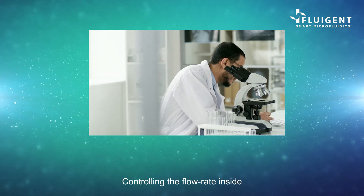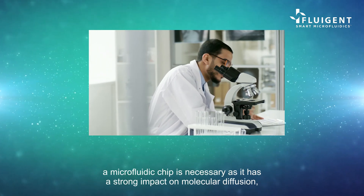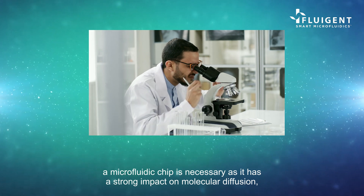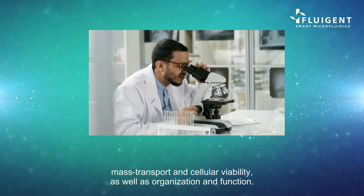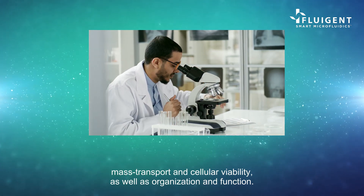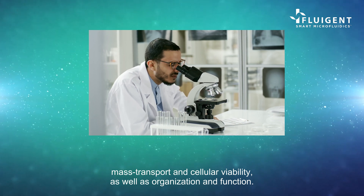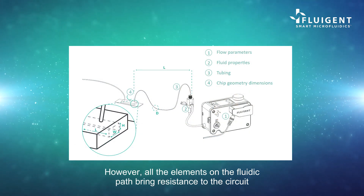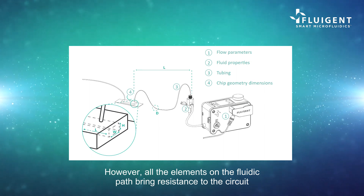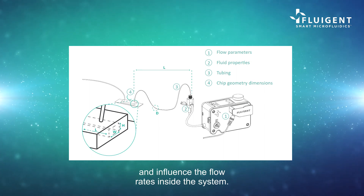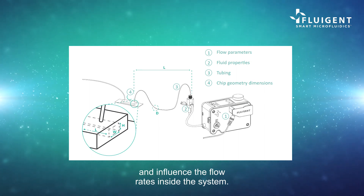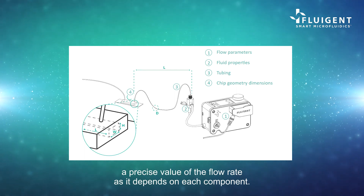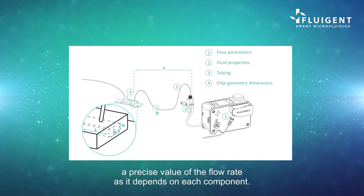Controlling the flow rate inside a microfluidic chip is necessary, as it has a strong impact on molecular diffusion, mass transport, and cellular viability, as well as organization and function. However, all the elements on the fluidic path bring resistance to the circuit and influence the flow rates inside the system, meaning it is difficult to determine a precise value of the flow rate, as it depends on each component.